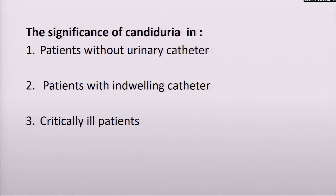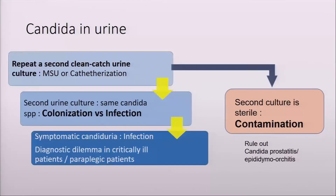This is the outline of my talk today: candiduria in a patient with catheter and without urinary catheter, and briefly, candiduria in critically ill patients. When you have urine cultures that grow yeast, first and foremost, you need to ask about the method of collection — whether this is a clean catch urine or collected through a sterilized method like catheter, or if the patient was on an indwelling catheter for a long time. That is crucial.